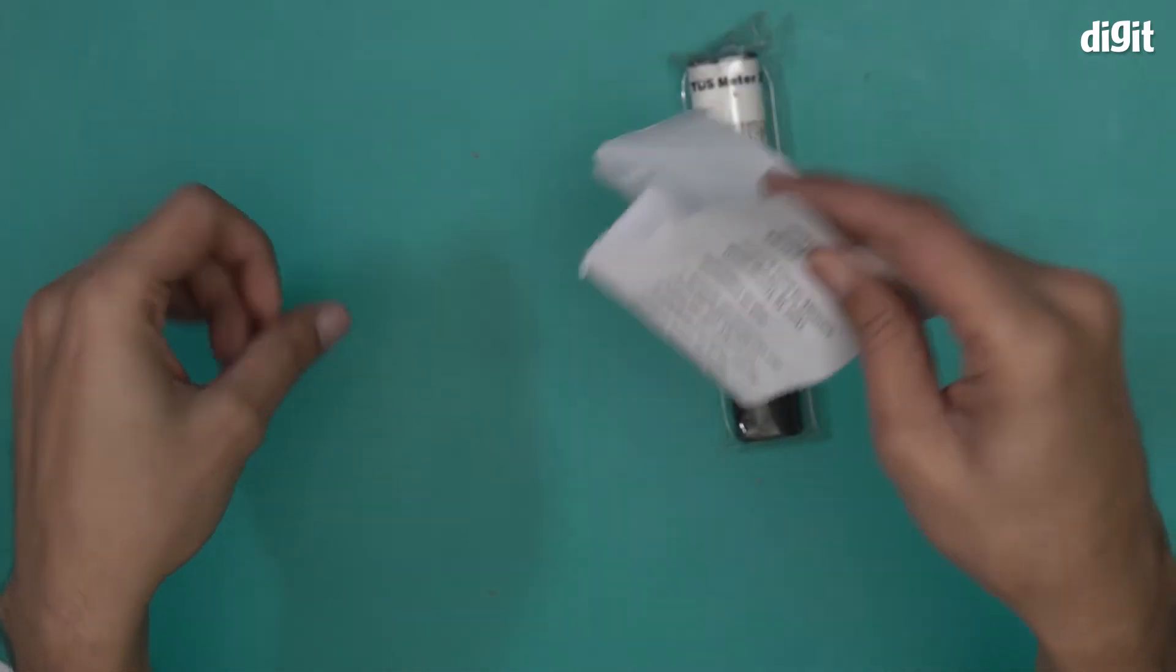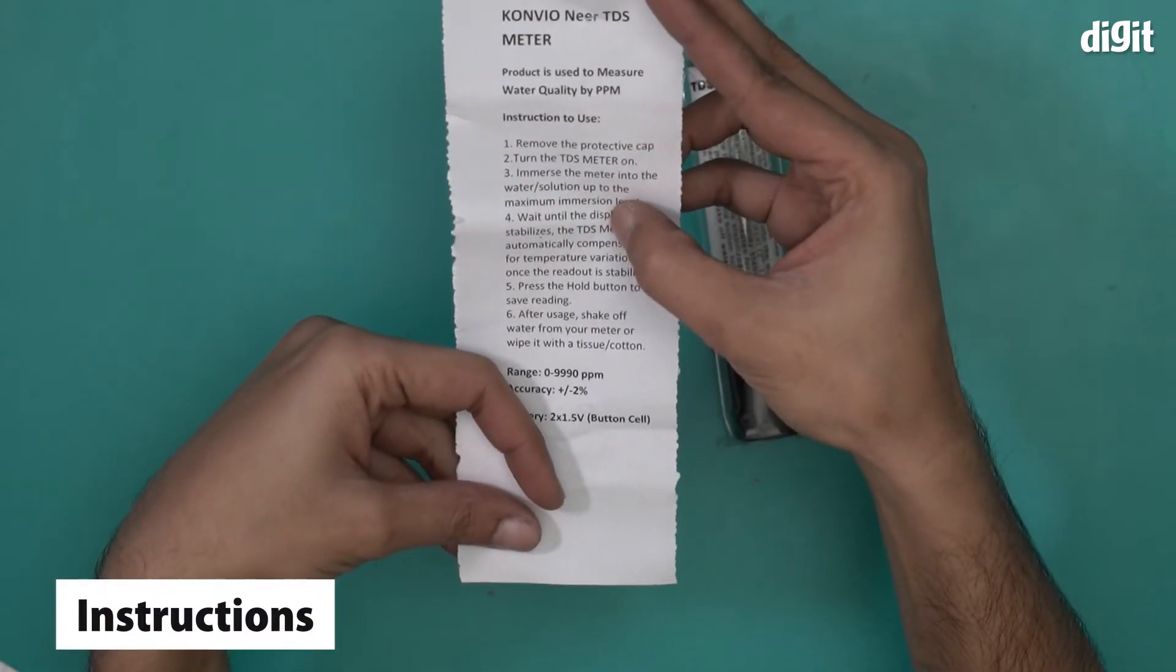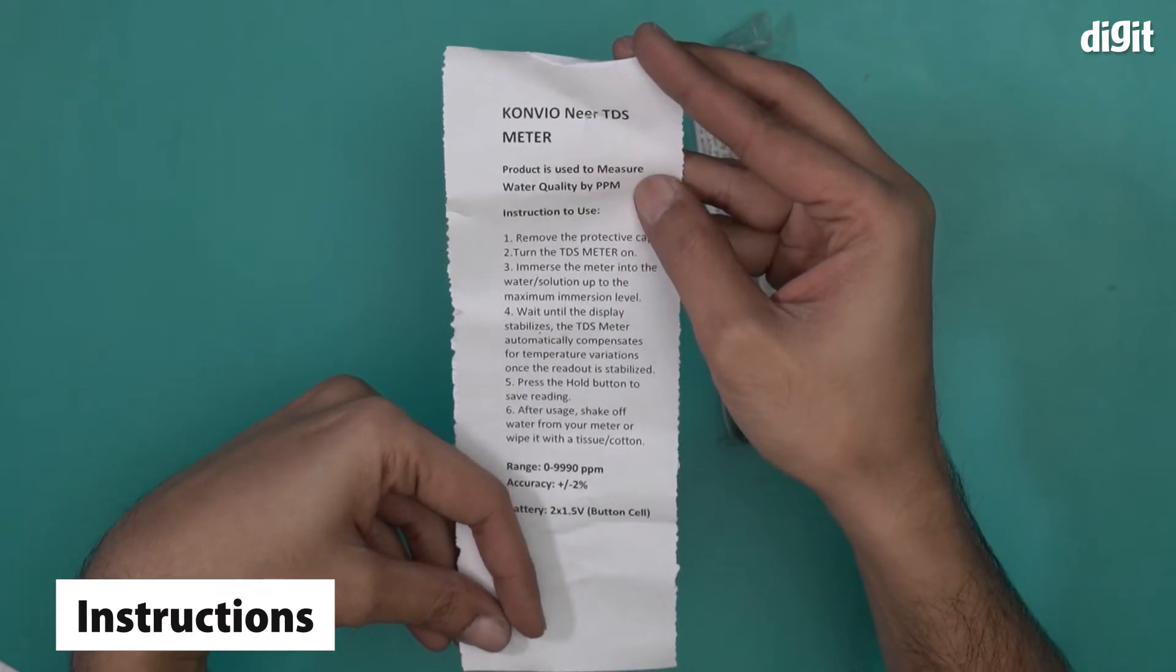So there you go. These are the components of the box. We have basically instructions on how to use this particular device. Product is used to measure water quality by ppm.